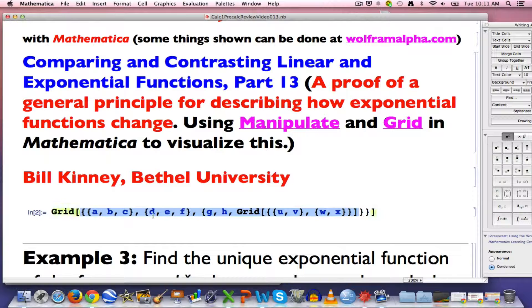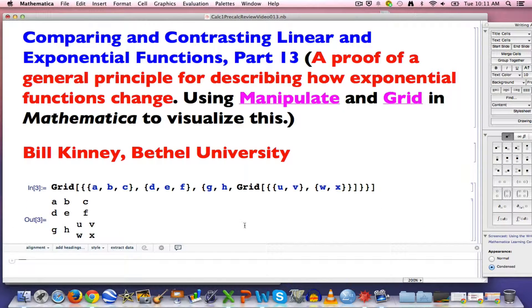What I've got inside the grid is going to create the letters A, B, and C in the first row of the matrix, the letters D, E, and F in the second row, and the letters G and H along with another matrix whose entries are U, V, W, and X in the last row of the overall 3x3 matrix. That is indeed what we get.